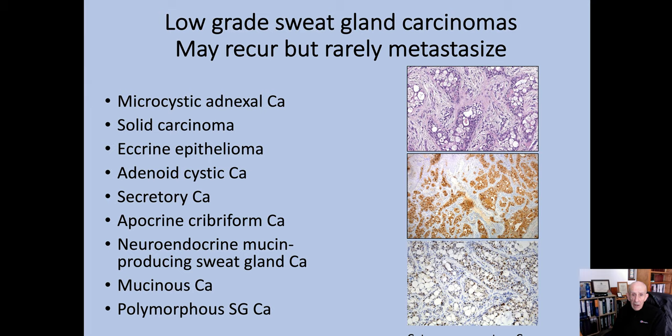This is a list of all the low-grade sweat gland carcinomas I can think of. I'm going to talk particularly about microcystic adnexal carcinoma, which includes solid carcinoma and eccrine epithelioma. I'll also talk about adenoid cystic and secretory carcinoma, and briefly touch on apocrine cribriform carcinoma. I won't be discussing neuroendocrine and polymorphous sweat gland carcinoma — I'll leave that for another day. This is a nice example of secretory carcinoma, and I'll discuss its immunohistochemistry a little later.